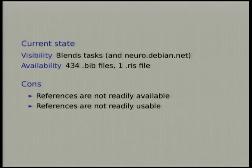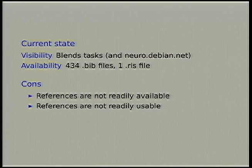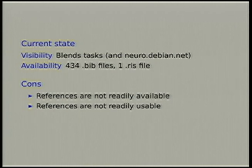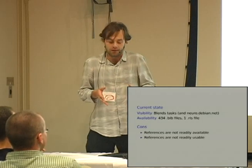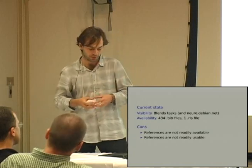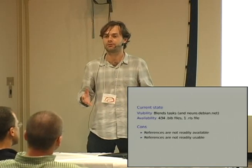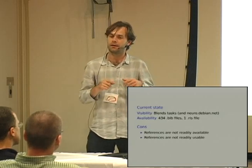What is our current state regarding visibility of software references? At the moment we can find them only on Blends and newer Debian because we pulled them out from there. Besides that, there are 434 BIB files distributed within the Debian system - quite a substantial amount - but they are spread all around the system. There is also one RIS file. Because of that, we don't have them readily available on the system.